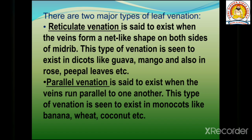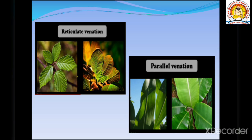Parallel venation exists when the veins run parallel to one another. Looking at the picture of reticulate venation, you can see a net-like structure where the midrib is prominent and other veins branch off in a network. In parallel venation, the veins form a parallel pattern alongside each other.